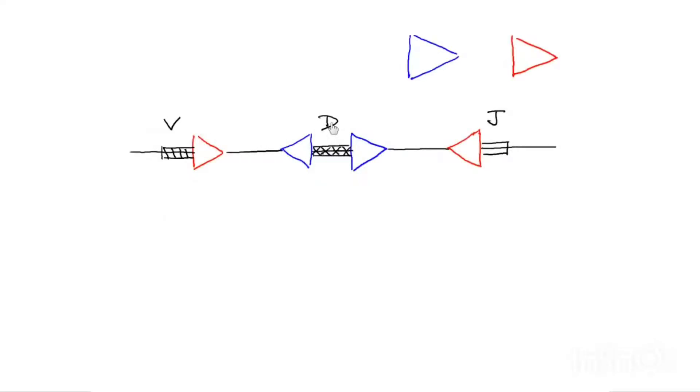What happens in V to J recombination is there is going to be recombination to bring a D segment next to a J segment and a V next to a D-J segment. So we're going to show that.